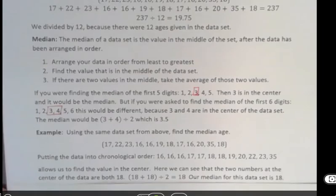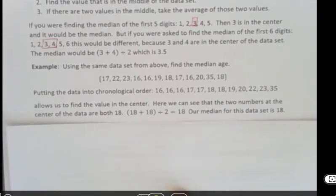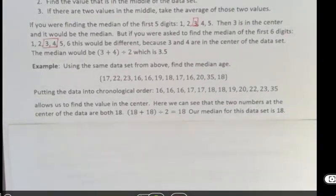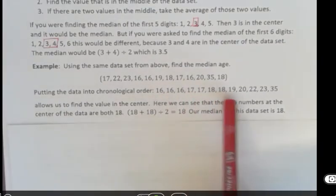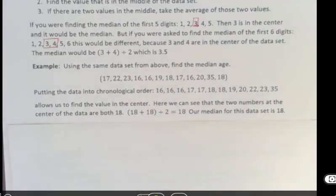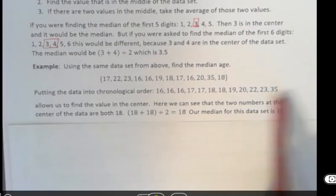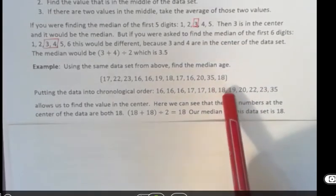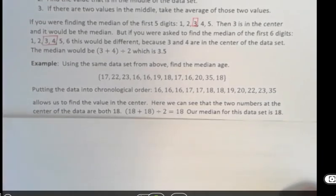Using our data set from before, we will start by rearranging that data in order from smallest to greatest. And as you can see, we have three 16s, two 17s, two 18s, 19, 20, 22, 23, and 35. Now, if there was an outlier here like somebody who was 80, that wouldn't change what's happening very much in the center. So that's why a median is a little less amenable to those big changes like mean is.